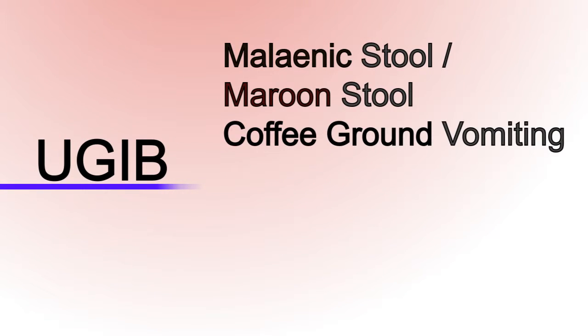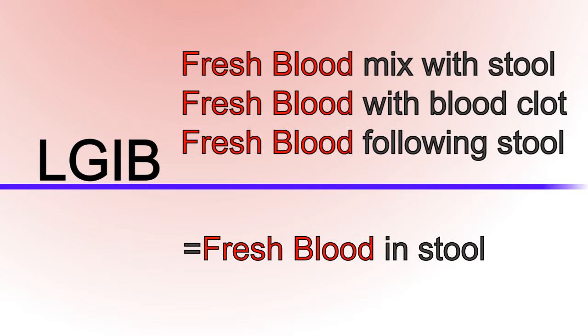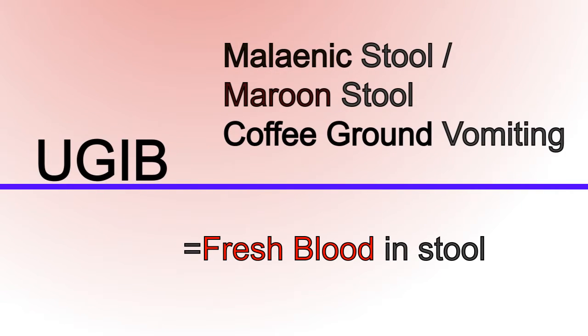If the PR is malignant or maroon in colour, or the patient has coffee ground vomiting, it is most likely UGIB. If it's fresh blood mixed with stool, fresh blood with blood clots, or fresh blood flowing with stool, it's more likely LGIB. Of course, if the UGIB is very severe, you can also get fresh blood in stool.